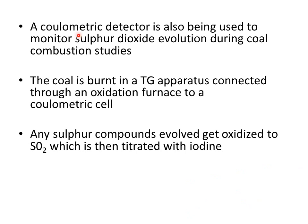A coulometric detector is also used to monitor sulfur dioxide evolution during coal combustion studies. The coal is burnt in a thermogravimetric apparatus connected through an oxidation furnace to a coulometric cell. During this process, any sulfur compound evolved is oxidized to sulfur dioxide, which is then titrated with iodine, and in this way the amount of sulfur dioxide is analyzed.